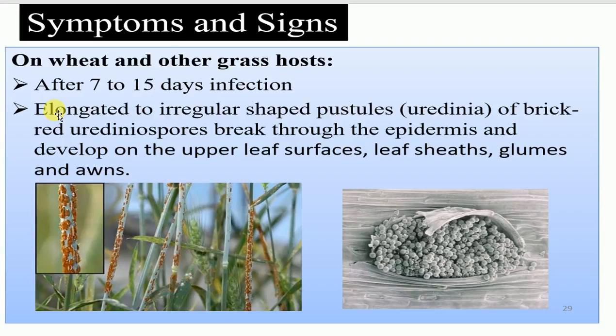A uredinium is a spore-producing body of some rust fungi. It is derived from the word 'uredinium,' the fruiting body of rust fungi that bears urediniospores. This pathogen doubles its infection on the upper leaf surfaces, leaf sheaths, and glumes.